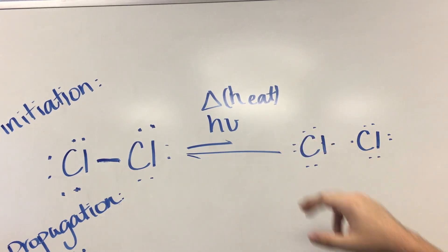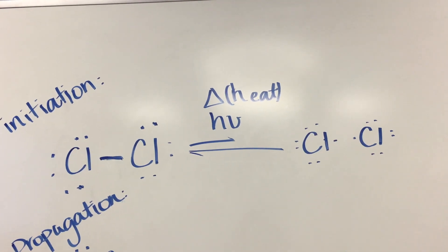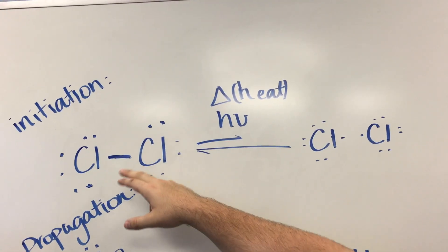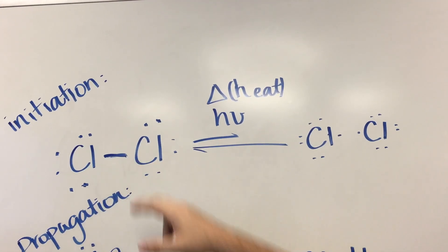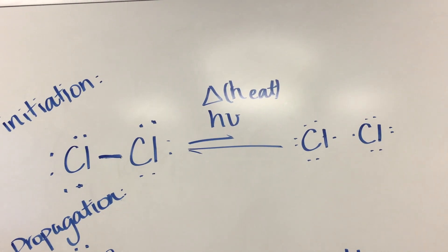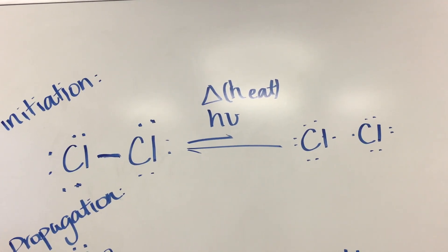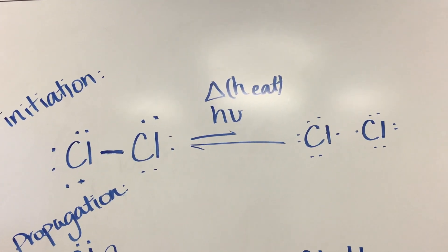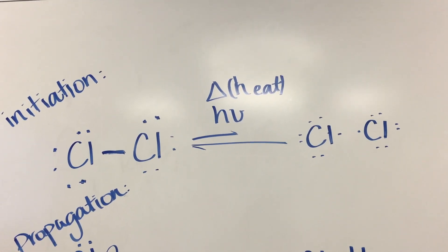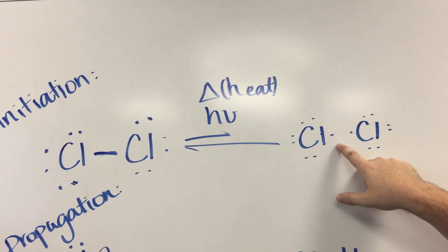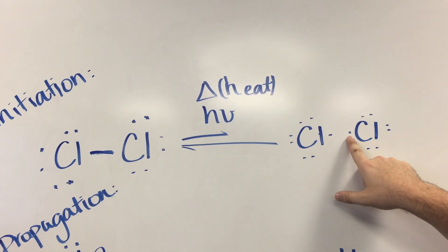The first step is called initiation. Using either heat or light, a halide — which is a molecule composed of two halogens, such as these chlorine atoms — can be split into two halide radicals. A radical is an atom or molecule that has one unpaired valence electron.